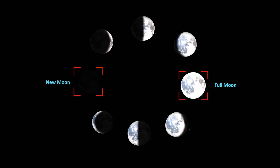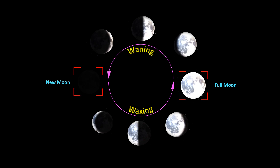The moon's illuminated area as viewed from the earth increases every day from the new moon to the full moon. The increase in the illuminated area of the moon as viewed from the earth is known as waxing, and the decrement in the illuminated area of the moon as viewed from the earth from full moon to new moon is known as waning.